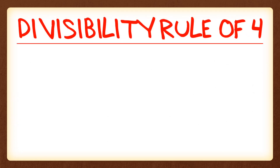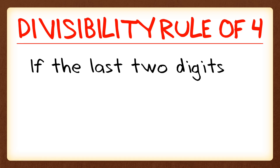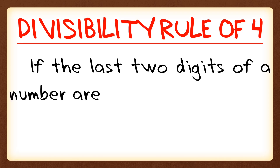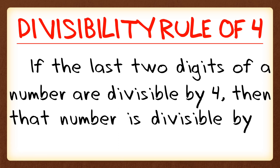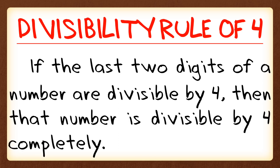In this video, we're going to learn about the divisibility rule of 4. If the last two digits of a number are divisible by 4, then that number is divisible by 4 completely. So in this rule, we're just going to look at the last two digits, and if it is divisible by 4, then the number is completely divisible by 4.